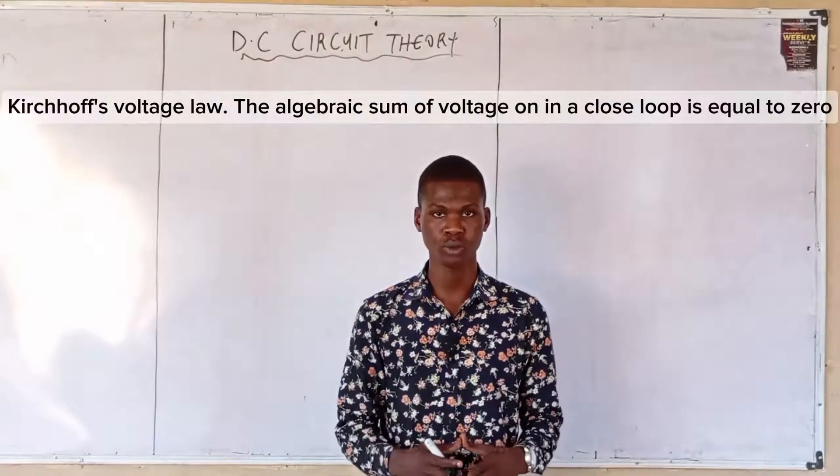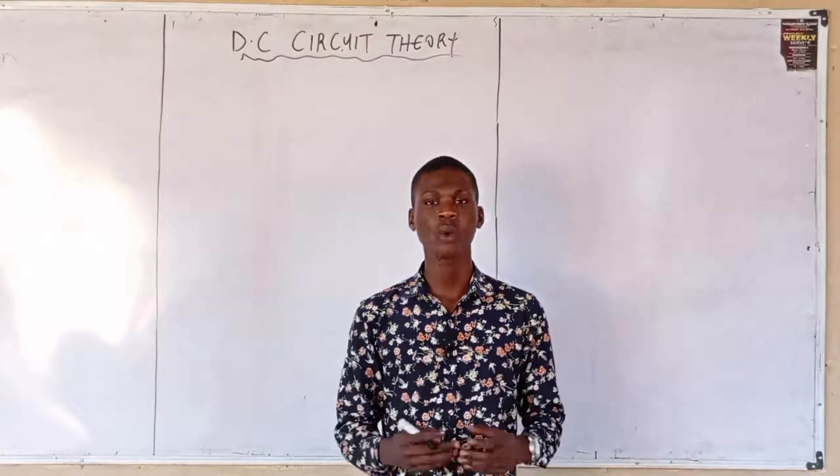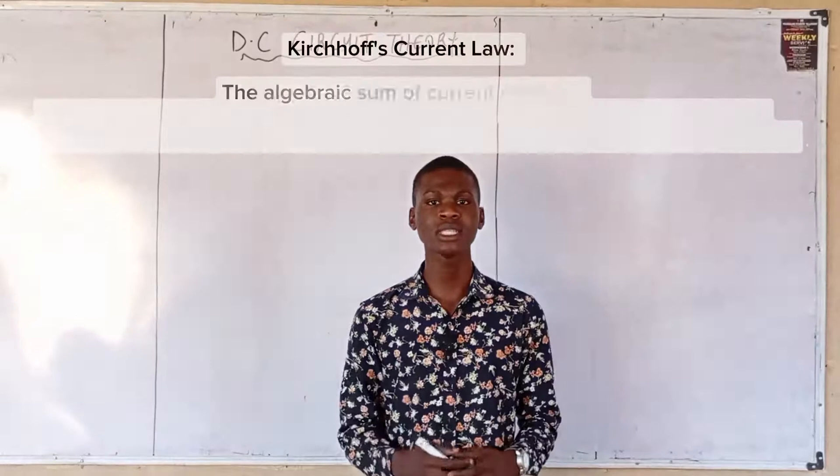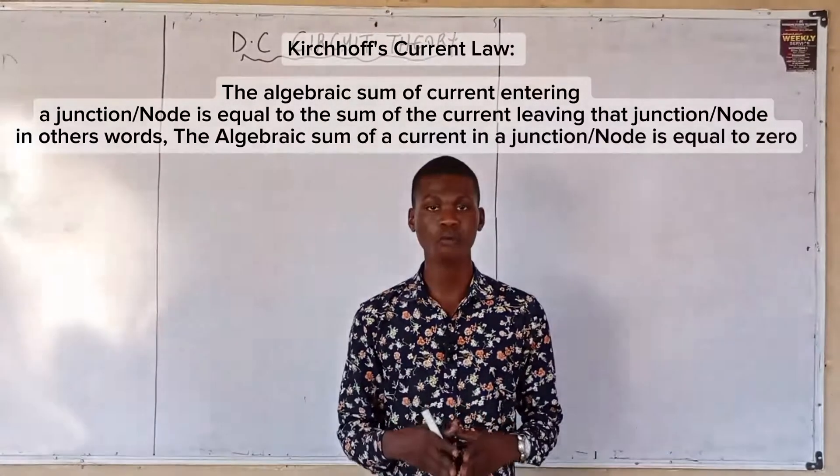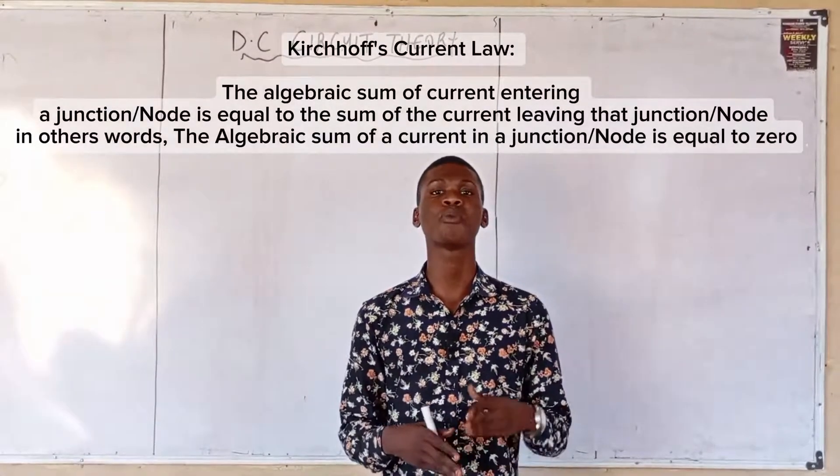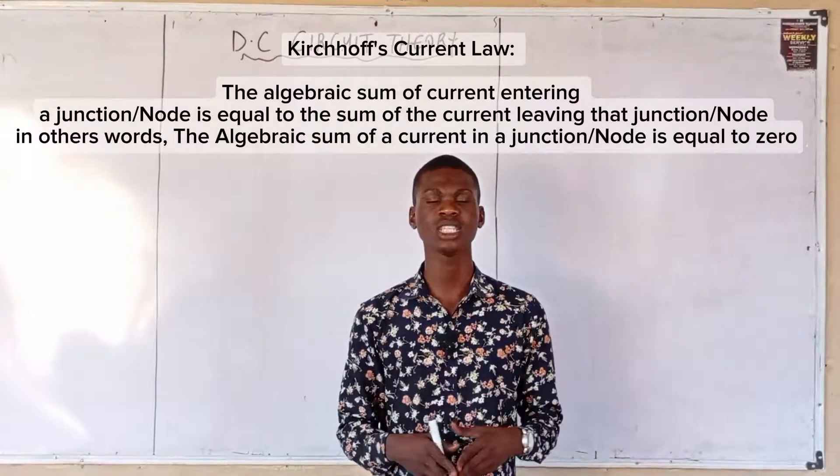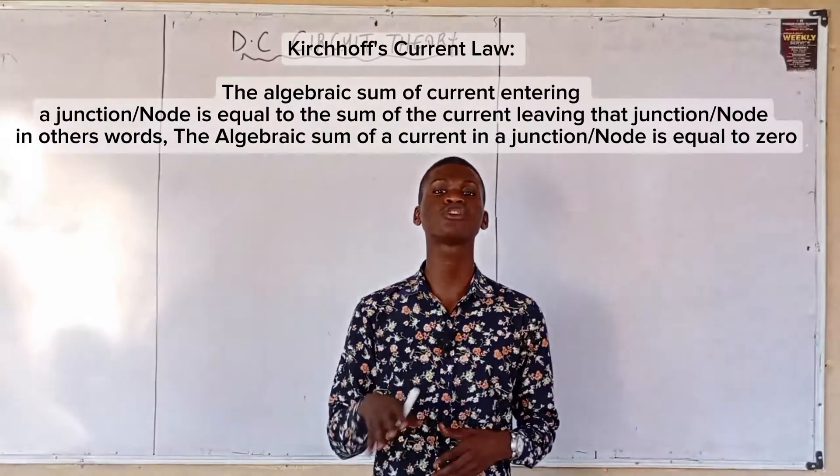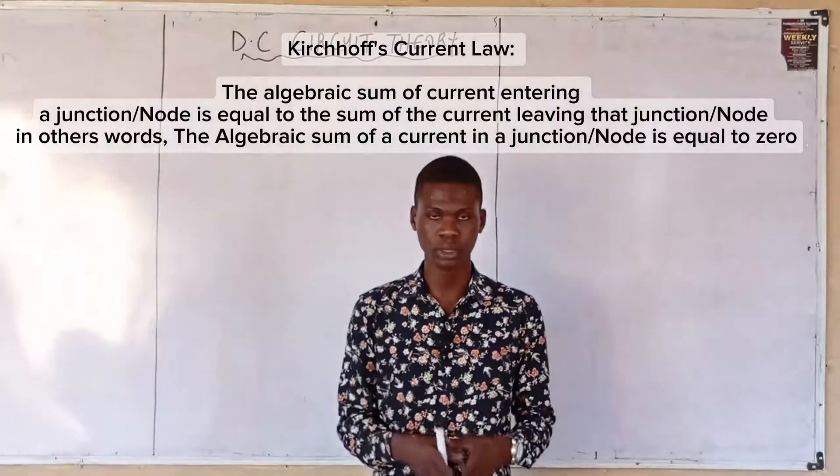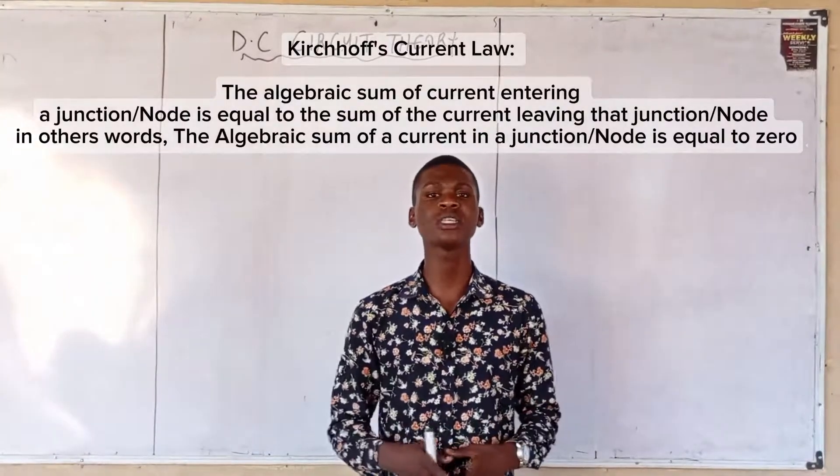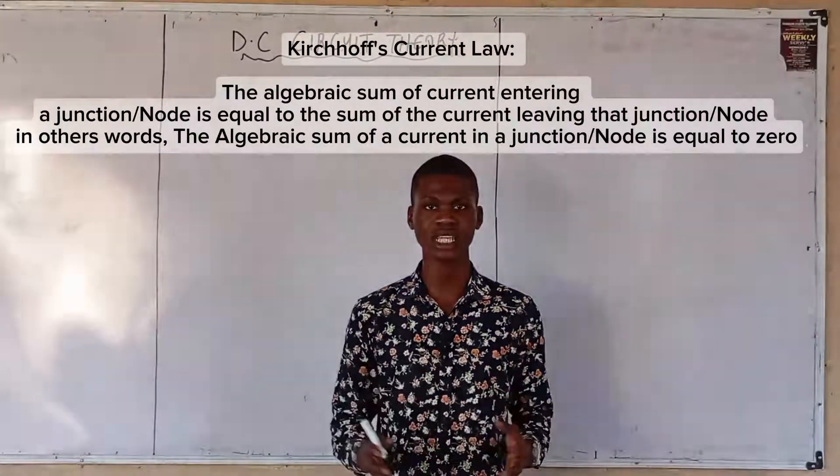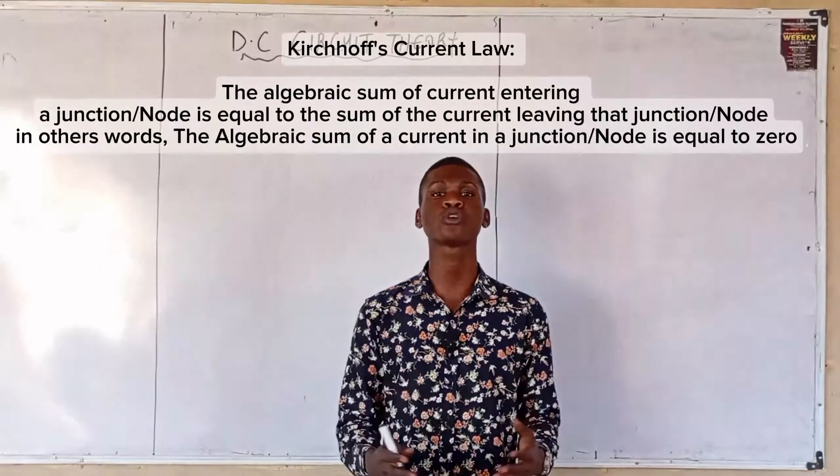KVL: the algebraic sum of voltage in a closed loop or in a circuit. KCL means the algebraic sum of currents entering a point or node is equal to the algebraic sum leaving that point. In other words, the algebraic sum of current at the point is equal to zero.